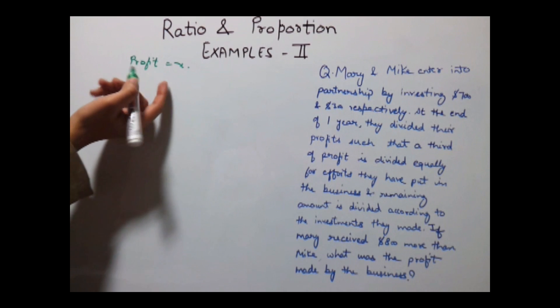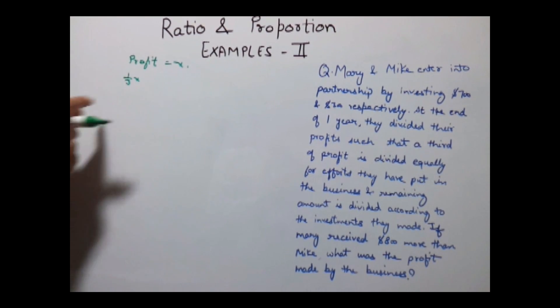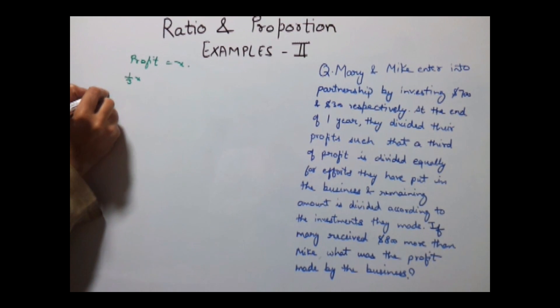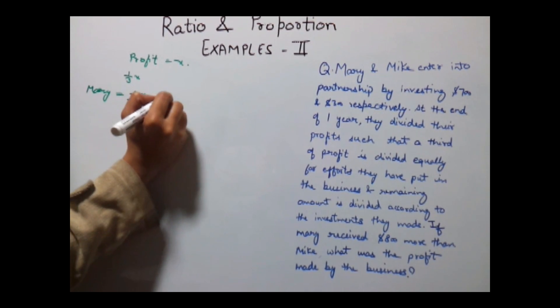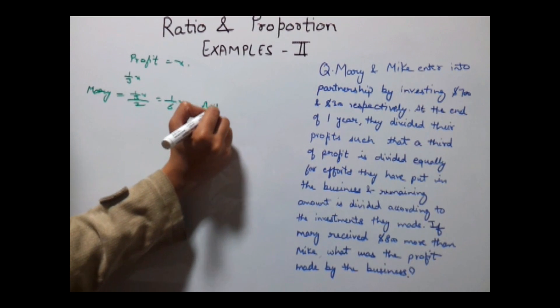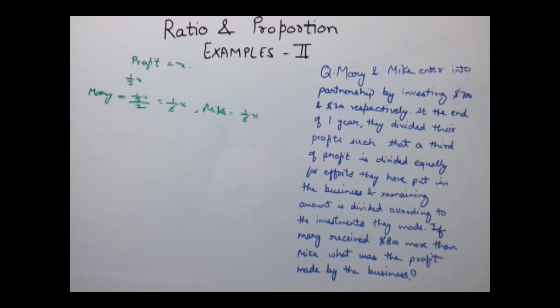Let's find out the first part. One third of X would be 1/3 X. This is divided equally. So Mary will get 1/3 X divided by 2, that is 1/6 X. Similarly, Mike will also get 1/6 X.